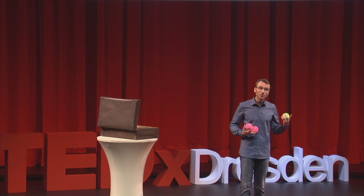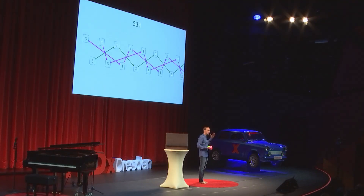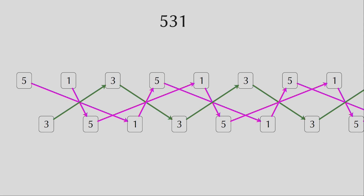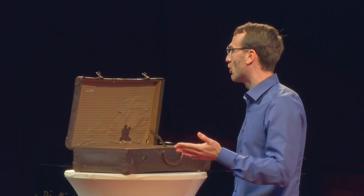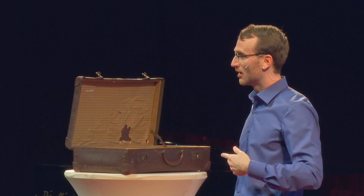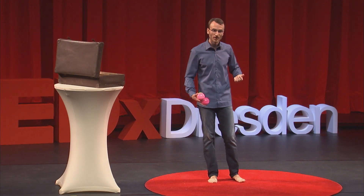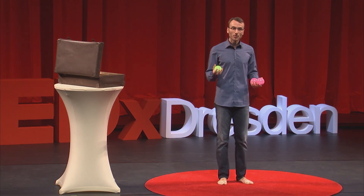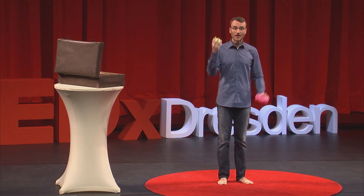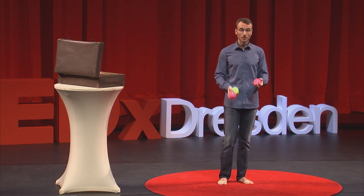We could say we can represent the juggling trick by a sequence of n-throws, or by a sequence of numbers — we call this a siteswap. There are some rules for how to interpret such a string. When I say five, three, one, I actually mean five, three, one, five, three, one, five, three, one — repeating. To keep our notation simple, we have the rule that we catch and throw only alternating, so we exclude synchronous throws. And each of our hands catches and throws only one ball at a time.